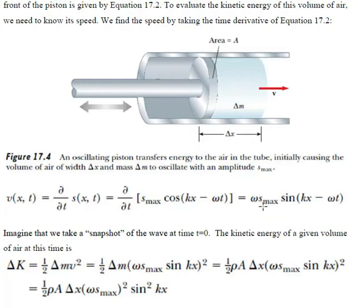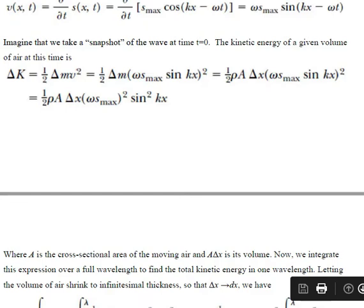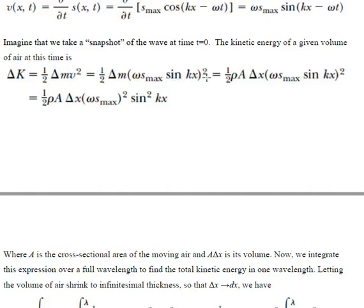If we consider the speed at time t = 0 and take a snapshot of this element, then v(x,t) at t = 0 equals ω·S_max·sin(kx). The kinetic energy associated with this mass element is: delta K = half·delta m·v squared, where delta m is the mass of the air element and v is determined from this relation. So delta K = half·delta m·(ω·S_max·sin(kx))².